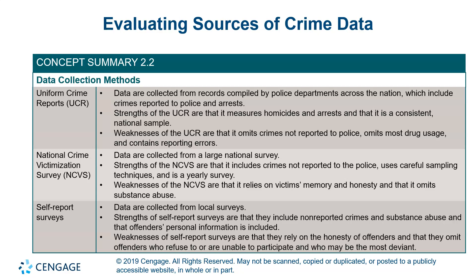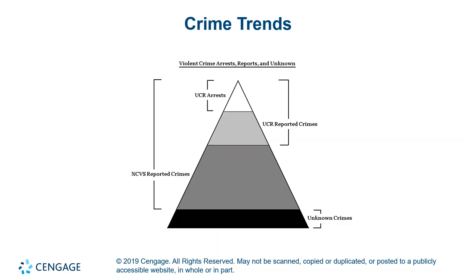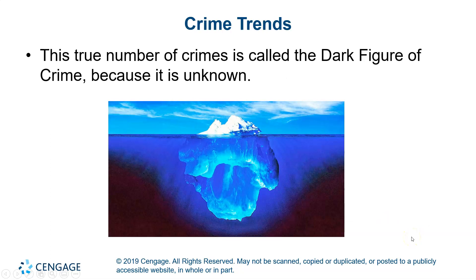These charts are very helpful where you can look at each of these things we talked about — the big three of the UCR, the NCVS, and self-reported surveys. Now we're going to talk about crime trends. There's a pyramid: the UCR covers arrests and reported crimes; the NCVS is supposed to pick up the rest; and then there are unknown crimes. The true number of crimes is called the dark figure of crime because you really don't know — not everybody reports, not everybody does the surveys. When you look at this photo, you can calculate the iceberg above the water, but down below you just don't know.